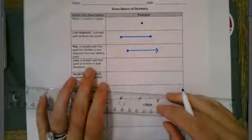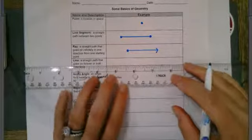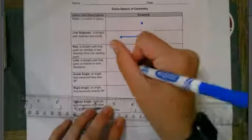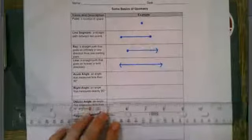Line. A straight path that goes on forever in both directions. So I'm going to draw my straight path and then two arrows to show that it goes on forever.